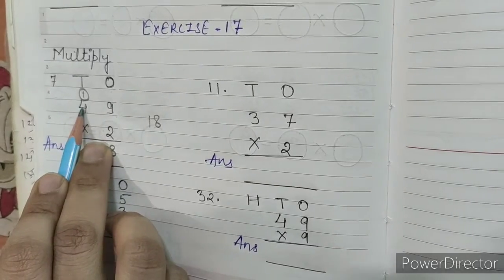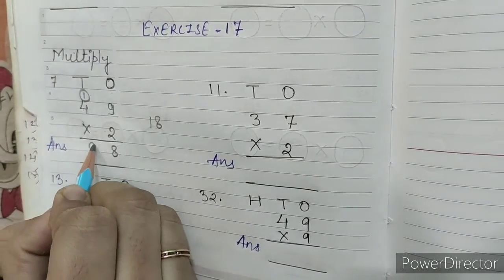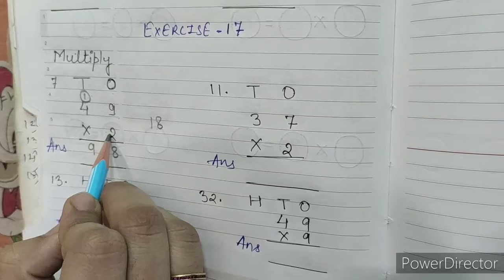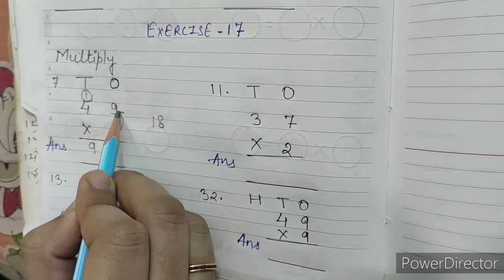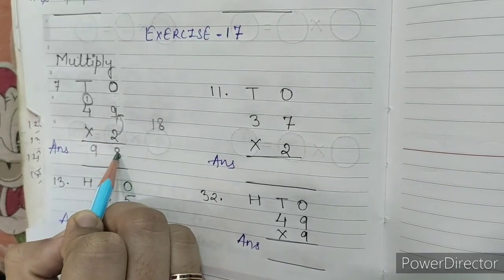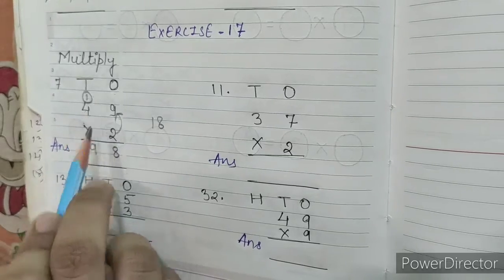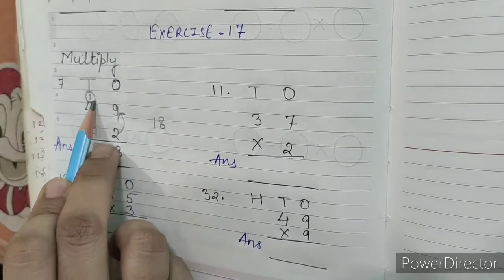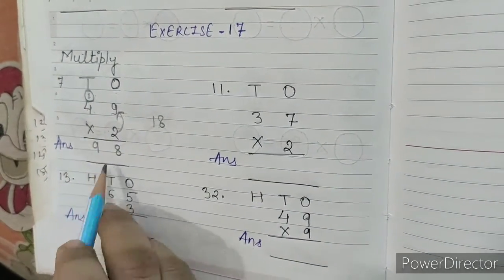So, 2, 4s are 8 plus 1, 9. 49 into 2, 2, 9s are 18. We have written 8 and carry over 1. 4, 2s are 8. 8 plus 1, 9. So, our answer is 98.